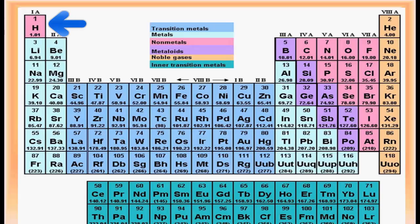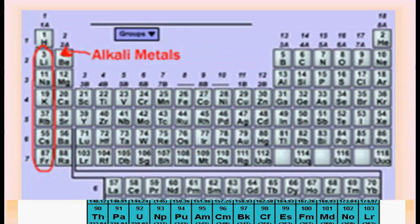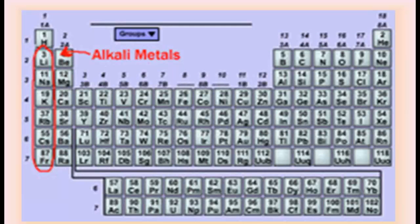However, hydrogen is a non-metal, as we have already discussed. The modern periodic table classifies elements on the basis of metals to non-metals as we move from left to right. So the question arises: why has hydrogen been kept above the alkali metals?